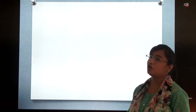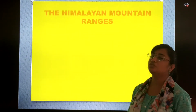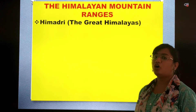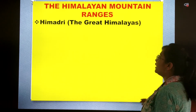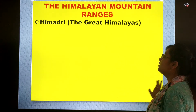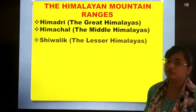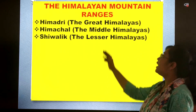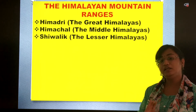Before we go through the topics in detail, let us see some important points which we need to keep in mind while watching this video. There are in all three ranges into which our Himalayan mountain ranges are divided. The first one is Himadri, the Great Himalayas. The second one is Himachal, the Middle Himalayas. And the third one is Shivalik, the Lesser Himalayas.